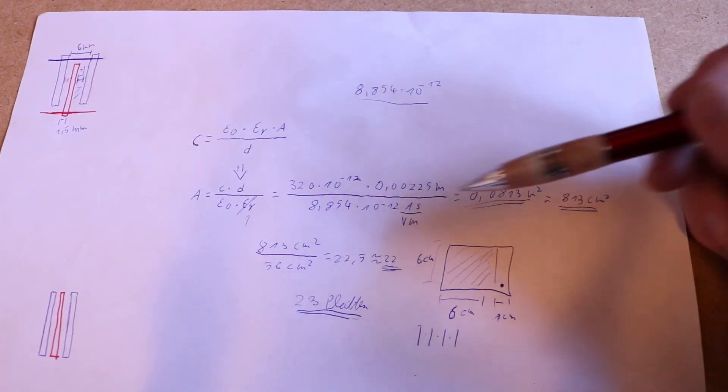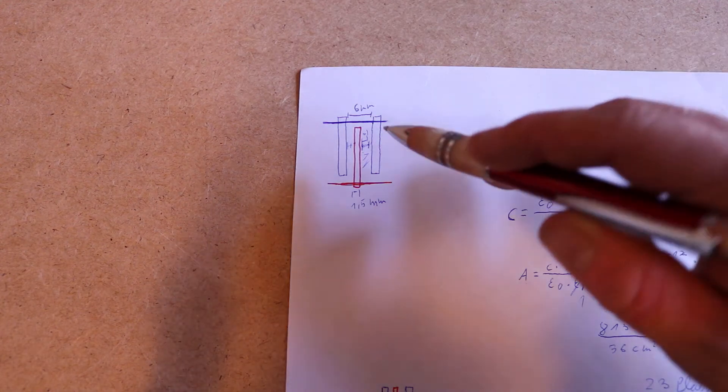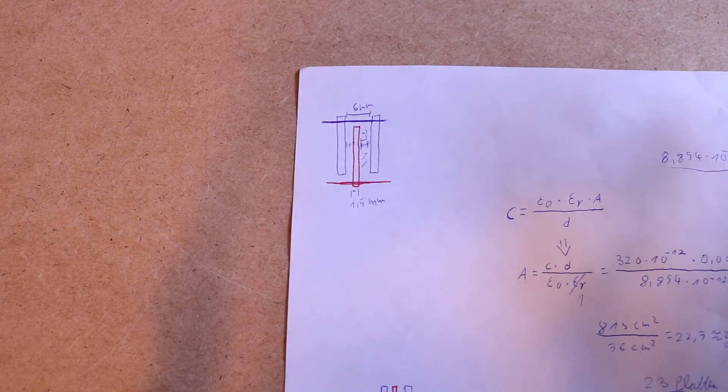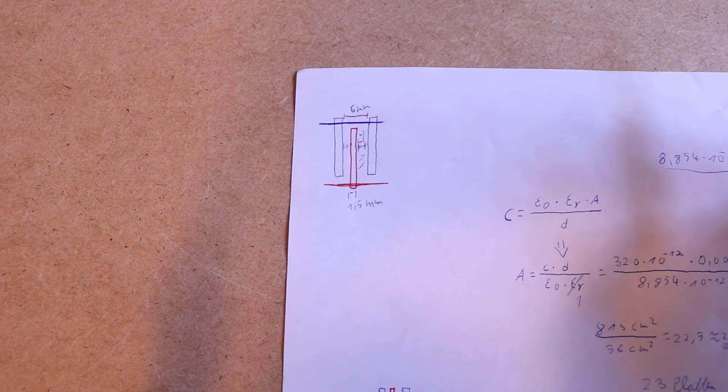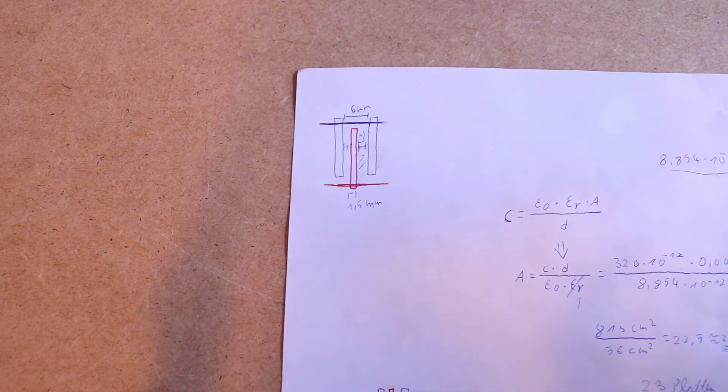But the problem is if you increase the distance between the plates, the capacitance is significantly reduced, so you have to keep it as small as possible; otherwise, you have to put more plates in there, and that's the problem I had—that's why I only got 320 pF.